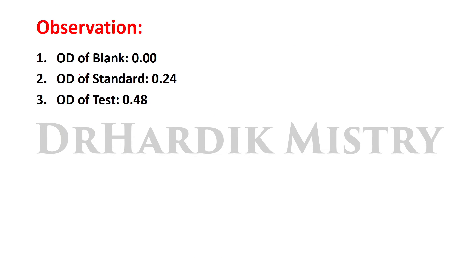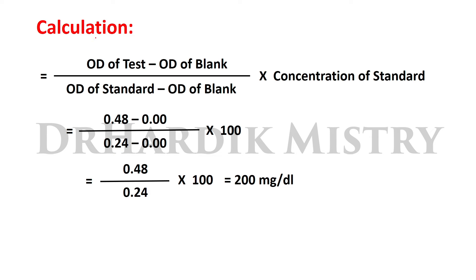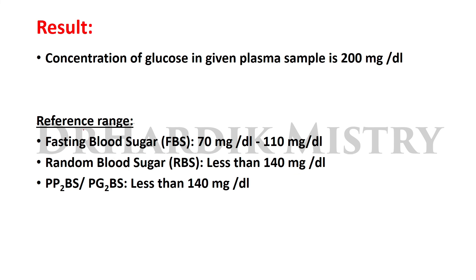The observations are: OD blank = 0.00, OD standard = 0.24, OD test = 0.48. The calculation formula is: (OD test − OD blank) / (OD standard − OD blank) × concentration of standard. So: (0.48 − 0.00) / (0.24 − 0.00) × 100 = 0.48 / 0.24 × 100 = 200 mg/dL.